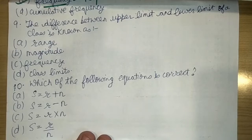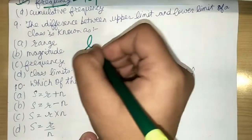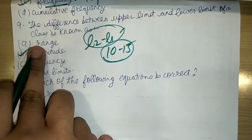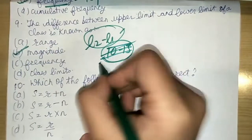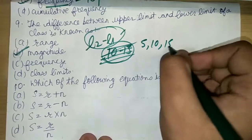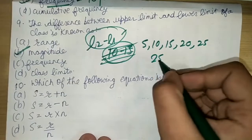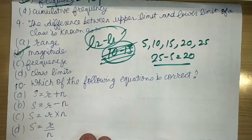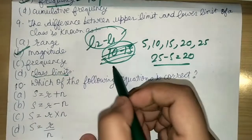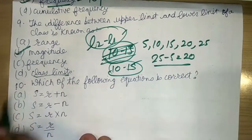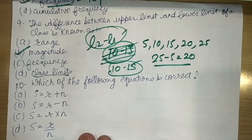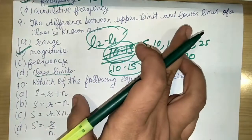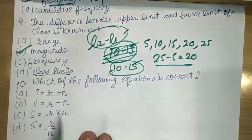The next question is: the difference between the upper limit and lower limit of a class is known as what? This is called magnitude. For example, in the class 10–15, the magnitude is 15 minus 10 equals 5. Range is different — range is highest minus lowest value in a series. Frequency refers to how often an item occurs. Class limits are the lower and upper limits themselves. So the answer is magnitude.